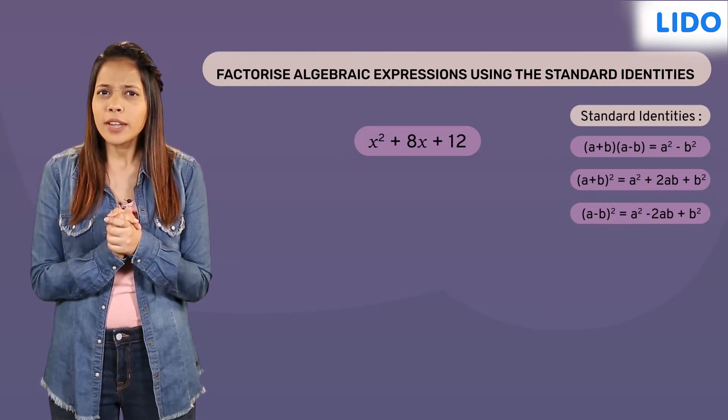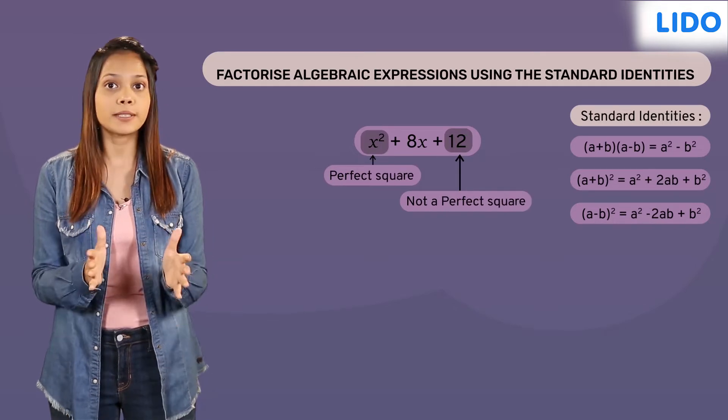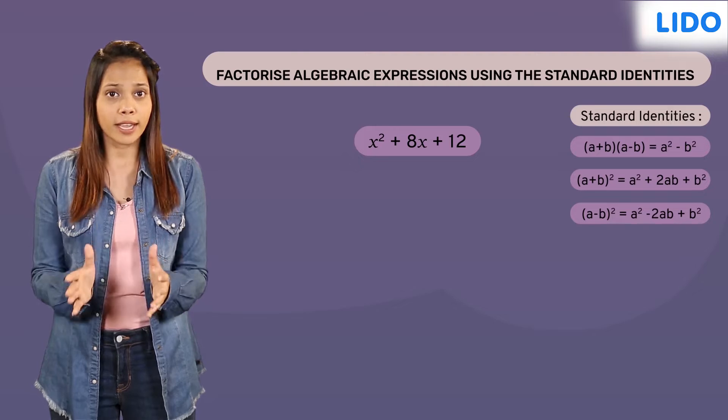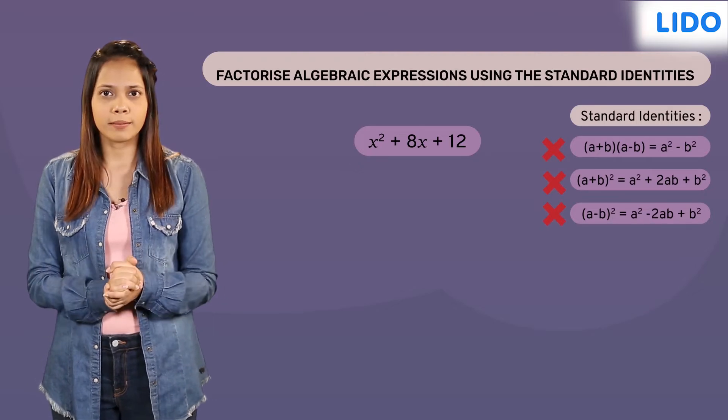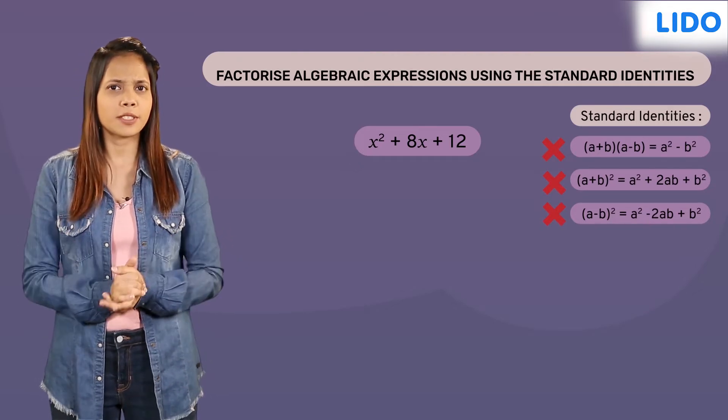In this case, there is only one term that is a perfect square. This expression does not relate to any of the identities. How do we factorise such expressions then?